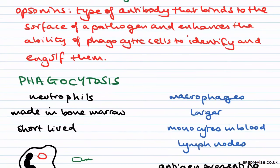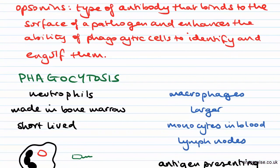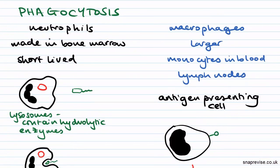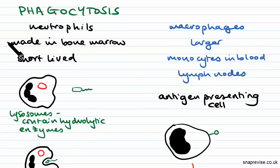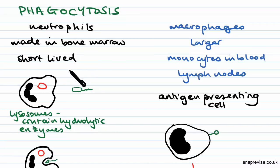This brings us to phagocytosis, which is pretty much your secondary defense. Phagocytosis is carried out by two cells: neutrophils and macrophages. Starting with neutrophils — they are probably the most common phagocytes, but they are quite short-lived. However, upon infection they can be made and released in large amounts. They are made in the bone marrow.